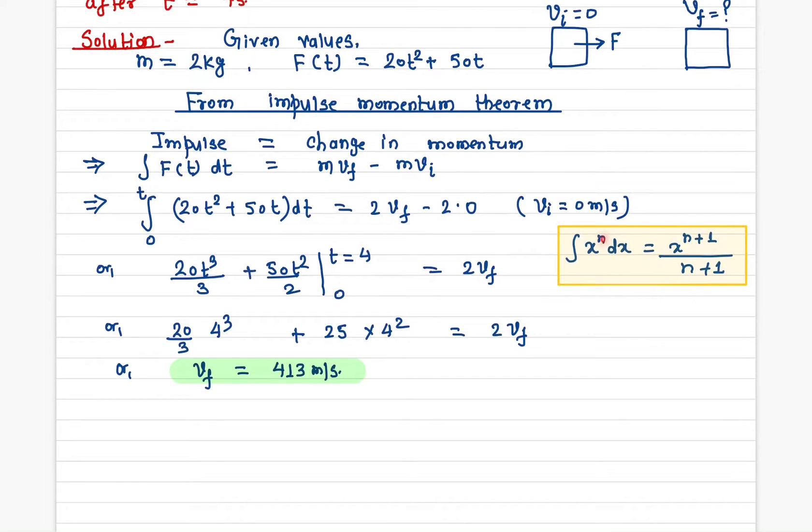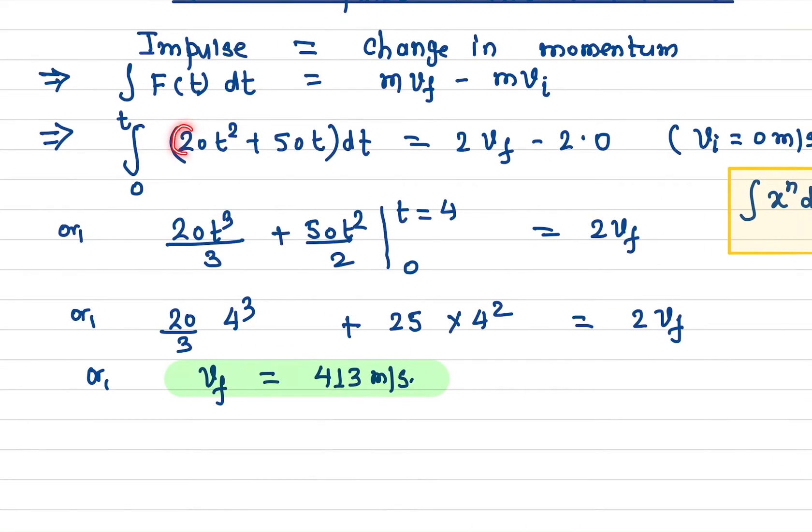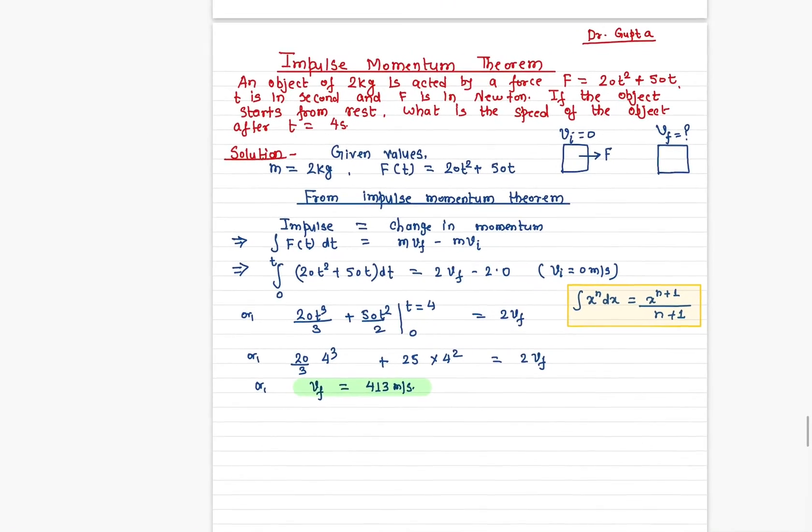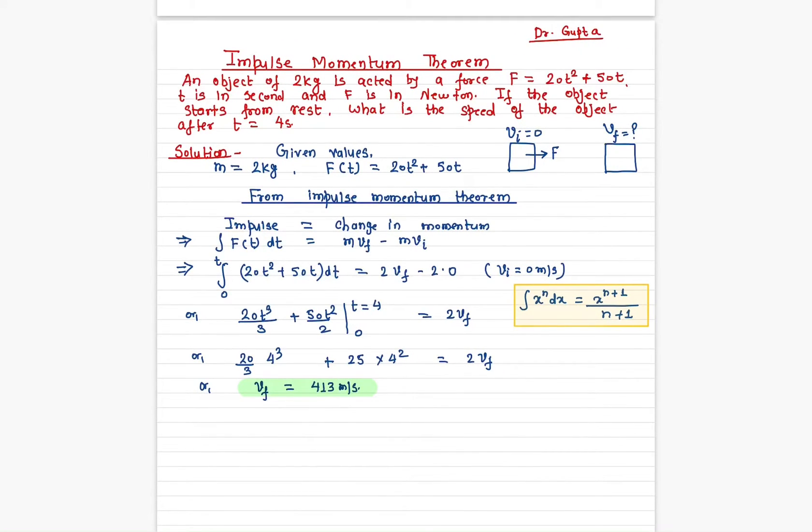The other thing you have to notice: the exponent has increased by one, and then you have n+1 here. So if we now integrate, 20 is a constant, so it will be t³ divided by 3. Again, 5t² one up and divided by 2.